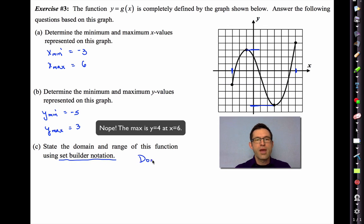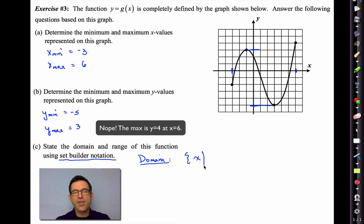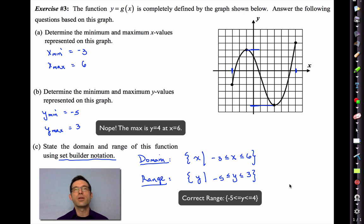Now letter C says state the domain and range of this function using set builder notation. There's no way to do this in roster form now because there's too many x and y values. But we can say the domain is all values of x such that x is greater than or equal to negative 3 while being less than or equal to 6. And the range, likewise, is all values of y such that negative 5 is less than or equal to y is less than or equal to 3. That's what's called set builder notation. We're also going to use something called interval notation, but we'll get to that in just a little bit. Pause the video, and then we'll clear this out.